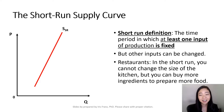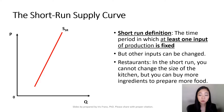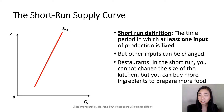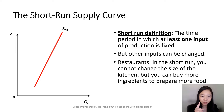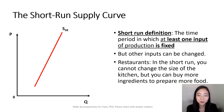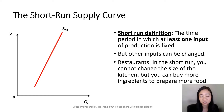Here is a short run supply curve. You can see that this is already a little bit more elastic than our immediate short run supply curve. The definition of short run is the time period in which at least one production input is fixed. Think about restaurants — in the short run, the kitchen size is fixed; you cannot change it. You can always buy more or less ingredients to prepare more or less food, but the size of the kitchen is fixed. So in that time period, we call that the short run. The short run supply curve is still pretty inelastic, but it is more elastic than the immediate short run supply curve.